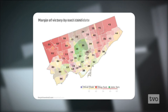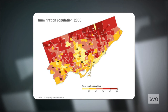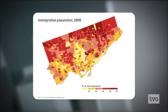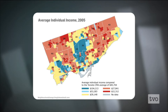The second map shows the city's immigration population — dark red indicating the ridings with the most immigrants, some with as much as 80% of their population made up of immigrants. The final map is of individual income: blue areas, the darker the higher the income, and red areas with the lowest incomes.